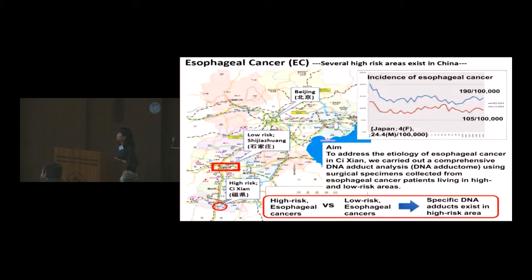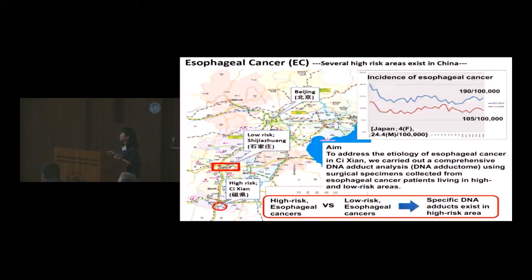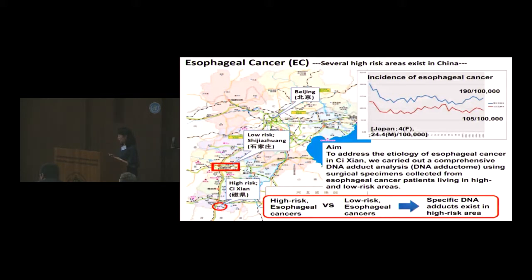In general, esophageal cancer is deeply related to alcohol drinking and smoking habits, but in this region those lifestyle factors cannot fully explain the high incidence. To address the etiology of esophageal cancer in this area, we carried out DNA adductome analysis using surgical specimens collected from esophageal cancer patients living in both high-risk and low-risk areas.